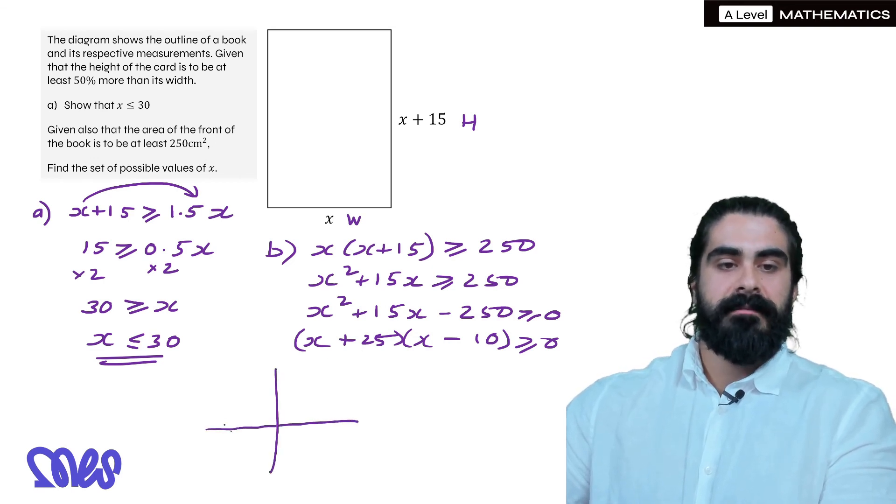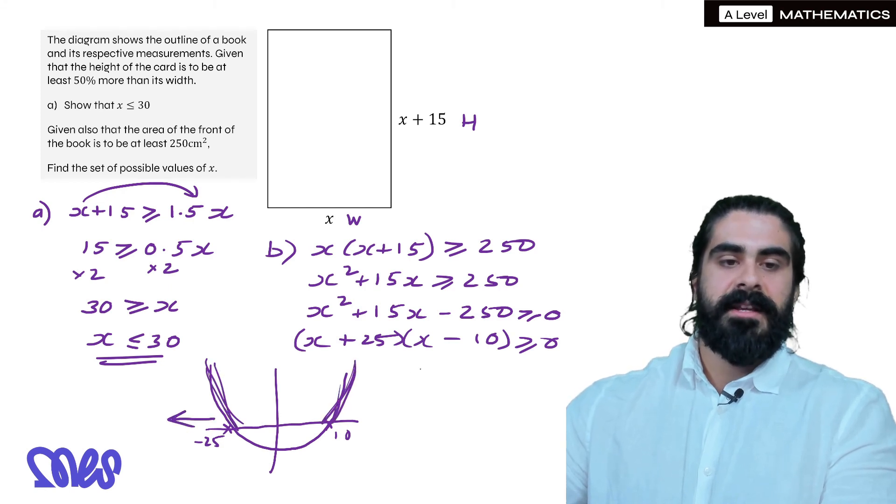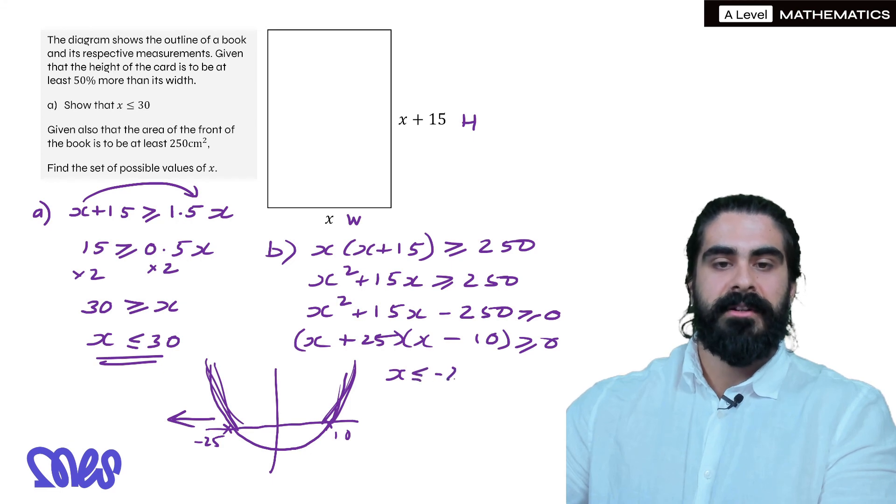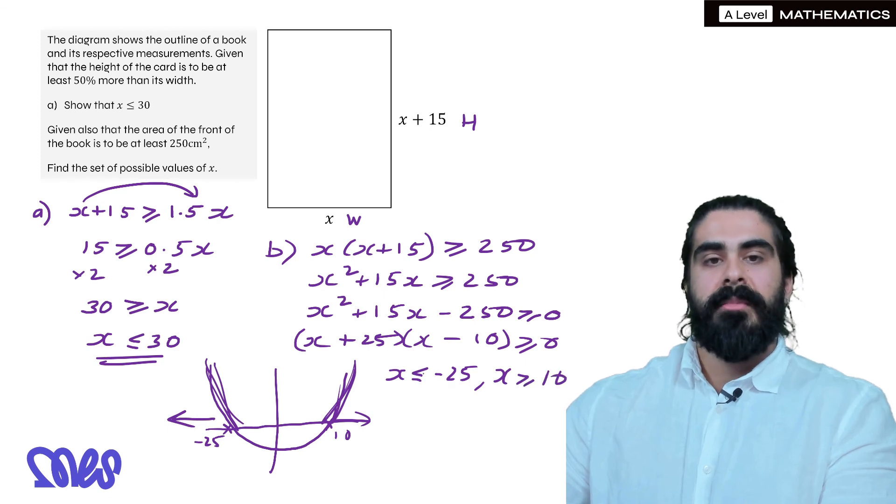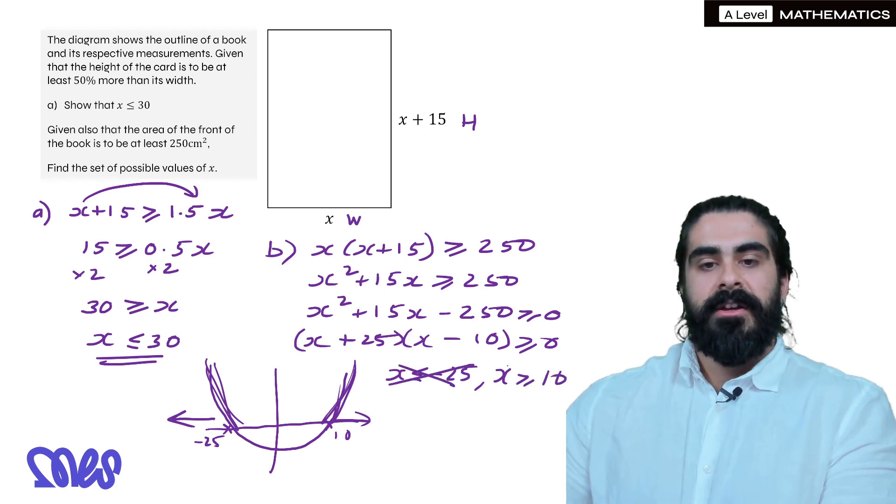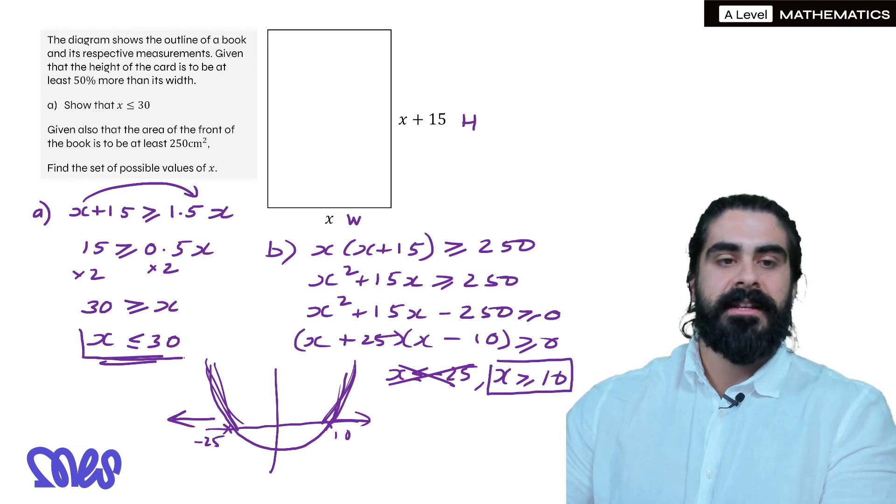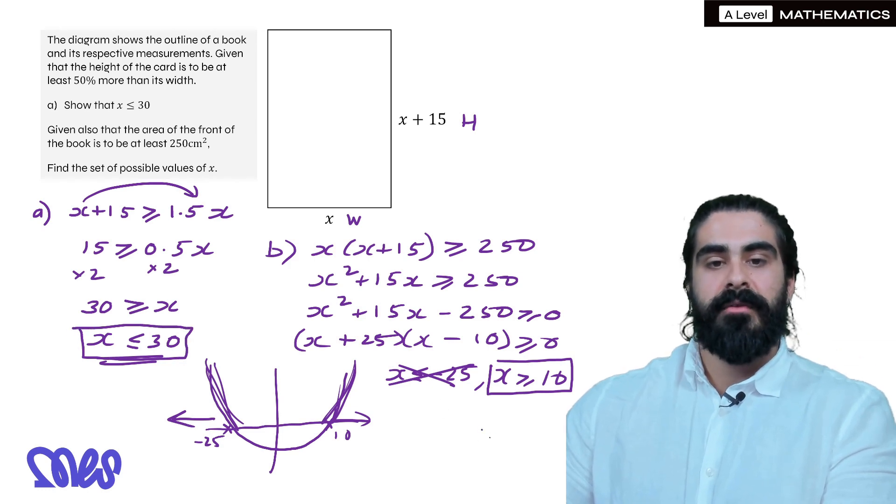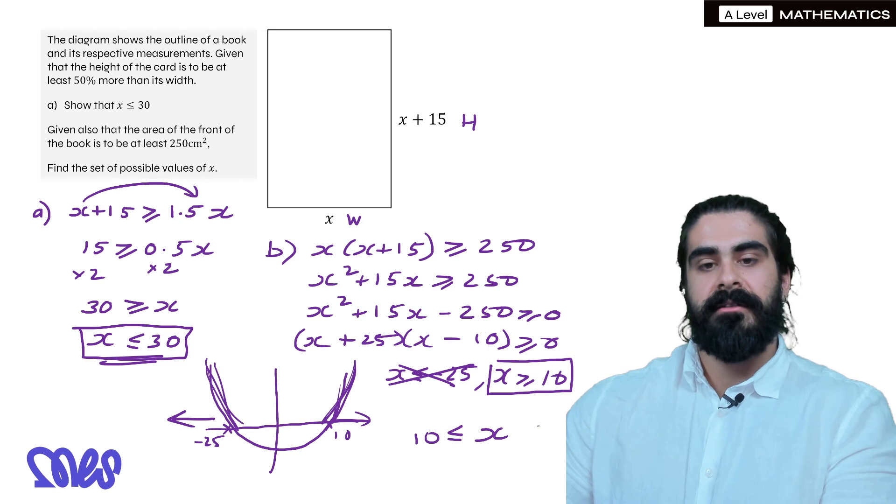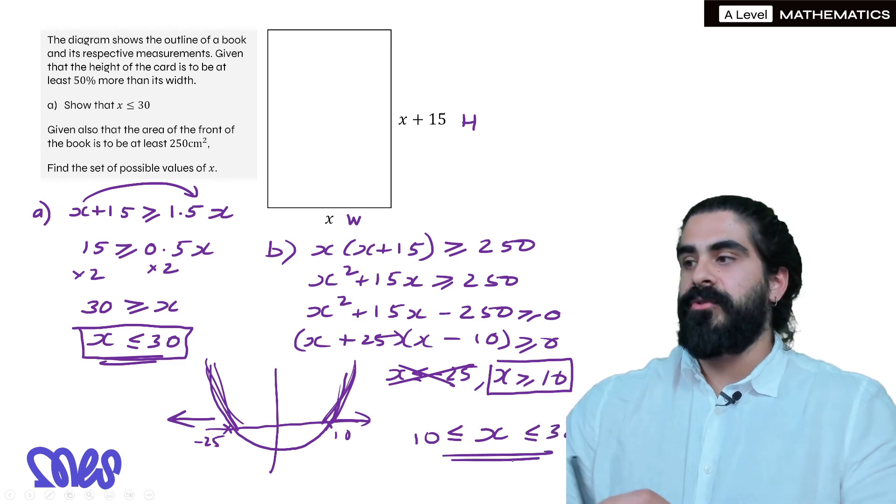And so when we do our diagram, the roots here are x is minus 25 and x is 10. So our graph looks something like this. Now when is it greater than or equal to 0? We're looking at this side and this side, so we're looking at x being less than or equal to minus 25, and x being more than or equal to 10. But we know x can't even be negative. So it has to satisfy x being bigger than or equal to 10, and from part a, x has to be less than or equal to 30. So what satisfies both is if x is between 10 and 30, and you can see that if you were to do a number line.